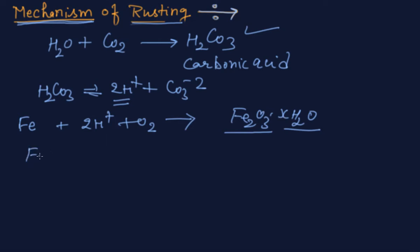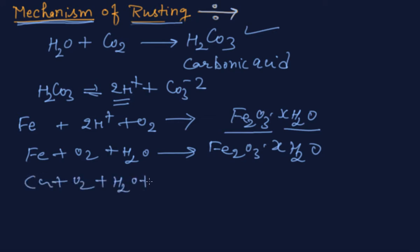Simply we are writing the equation, rusting of iron: Fe2O3 plus water, what it will give you? Fe2O3·XH2O. And we also can write the rusting of copper: Cu plus O2 plus H2O plus CO2.